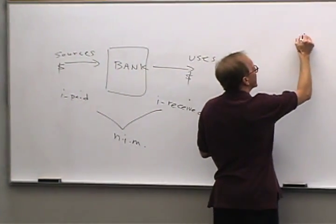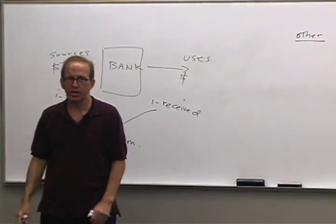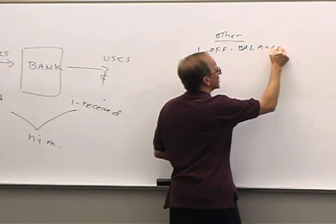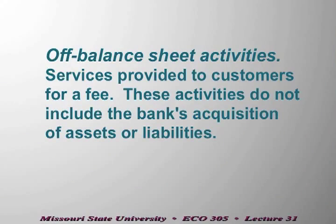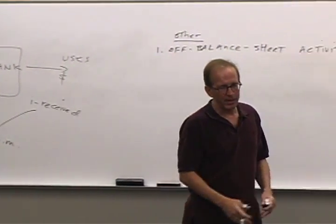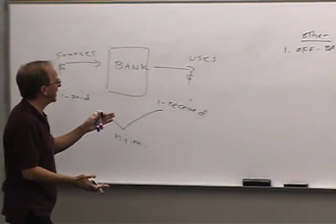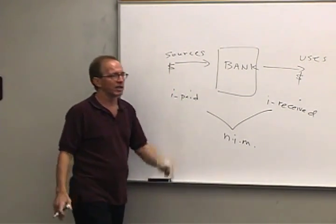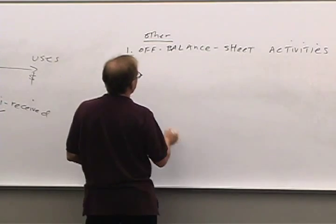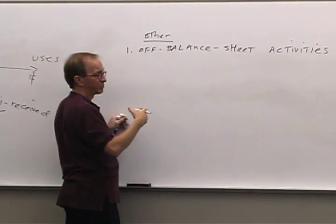There are other bank activities we'll discuss. One is off-balance sheet activities, which earn profits over and above what banks can earn from their net interest margin. Off-balance sheet activities are basically just bank services that don't show up either as assets or liabilities of the bank. Banks provide these services and it's basically just service for a fee.